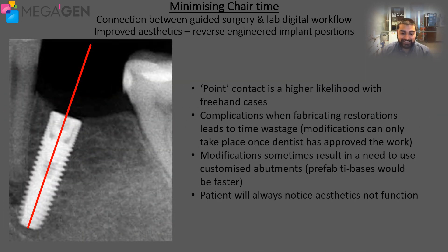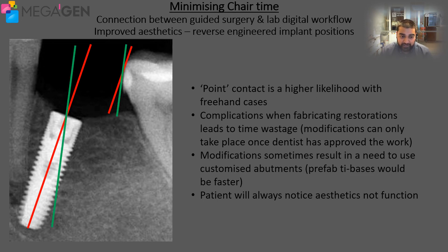When we talk about aesthetics for a case, we should also talk about the relationship between aesthetics and how function can also be affected. In this particular situation, you can see that the implant angle is not ideal for a very wide contact point, so we'd end up with what we call a point contact, which actually increases the food trap underneath the point contact, directly affecting the function of the crown. Guided surgery can actually avoid this process as well, while being able to analyse the situation digitally.